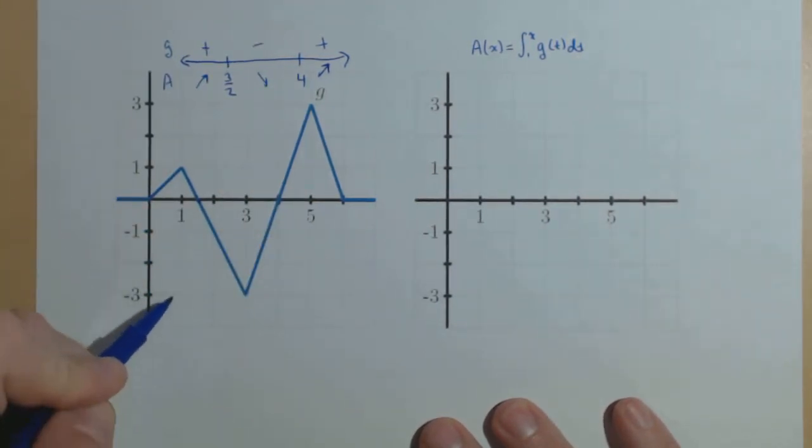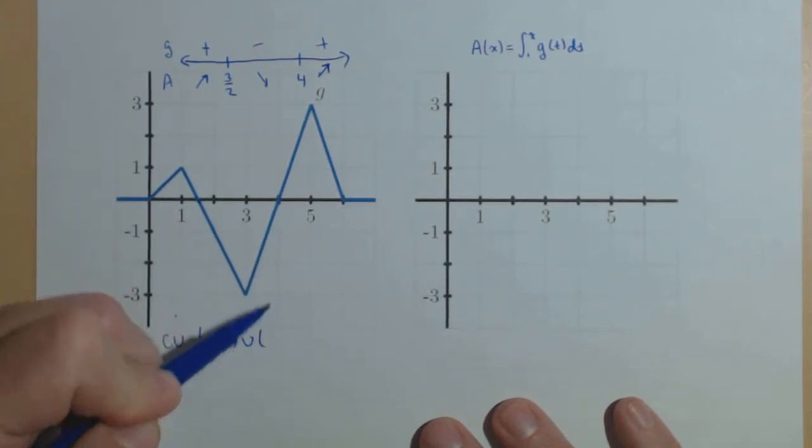What about concavity? Well, we'd expect it to be concave up any place the derivative is increasing, so 0 to 1, and 3 to 5.